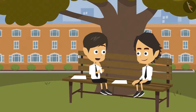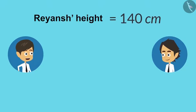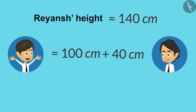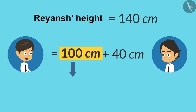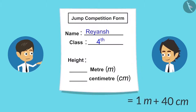Now I can also write my height by converting it into meters. My height is 140 centimeters. I can write it as 100 centimeters plus 40 centimeters. Since 100 centimeters equals 1 meter, my height is 1 meter 40 centimeters.